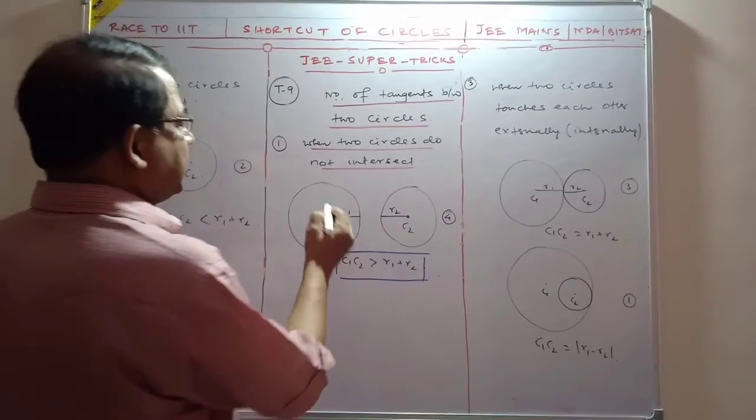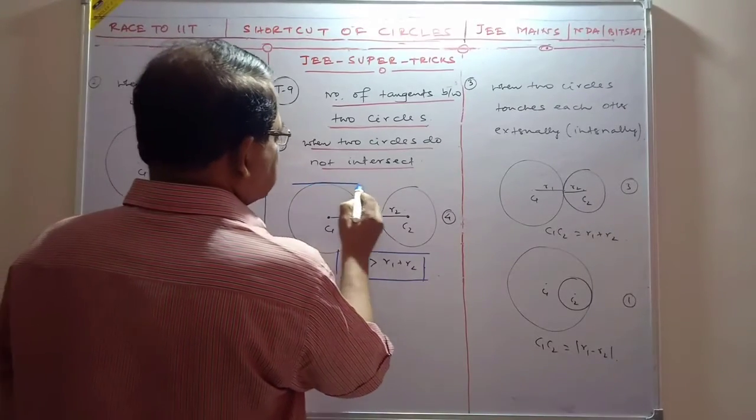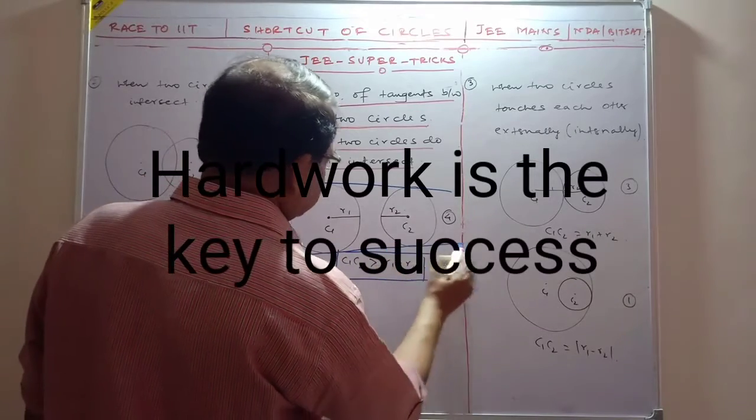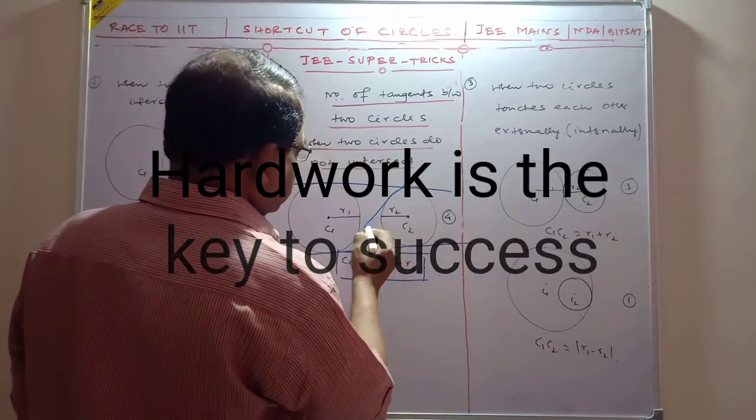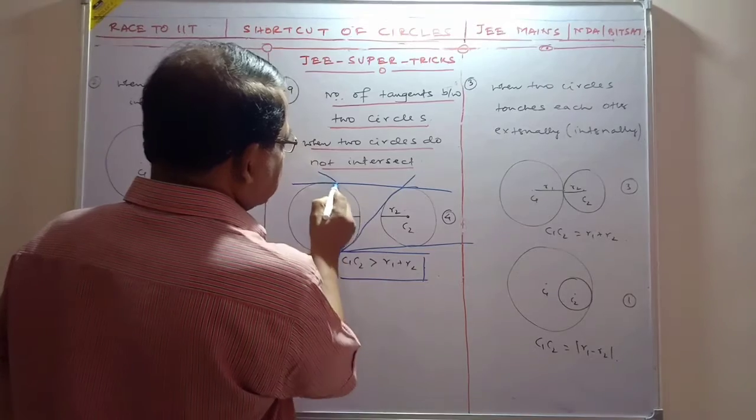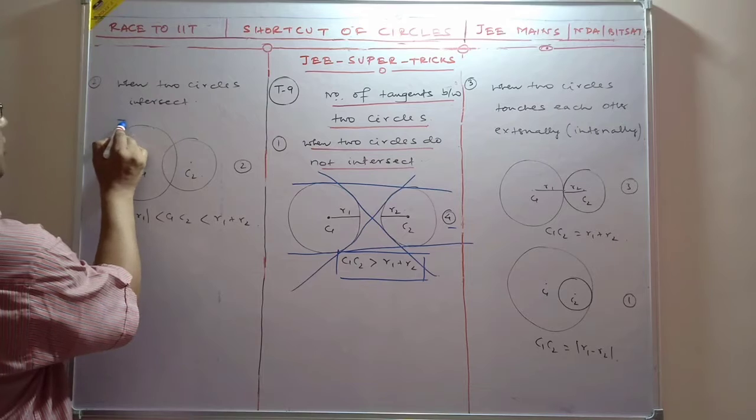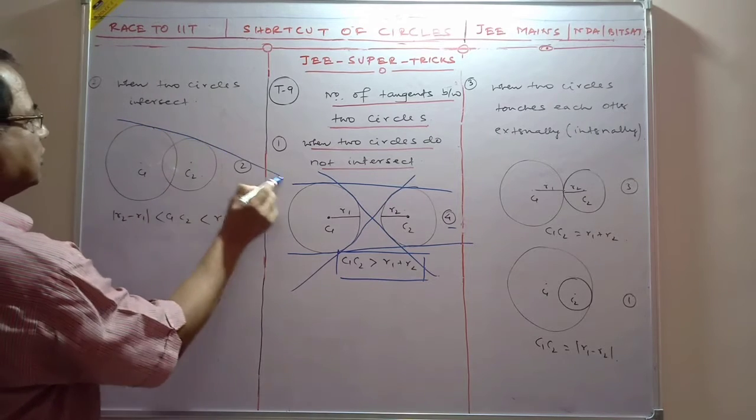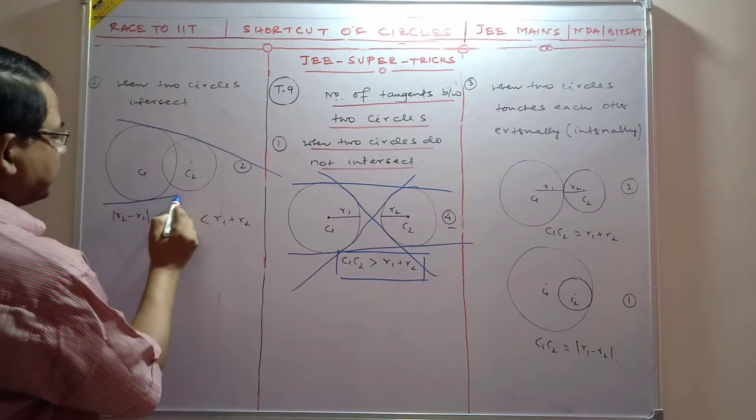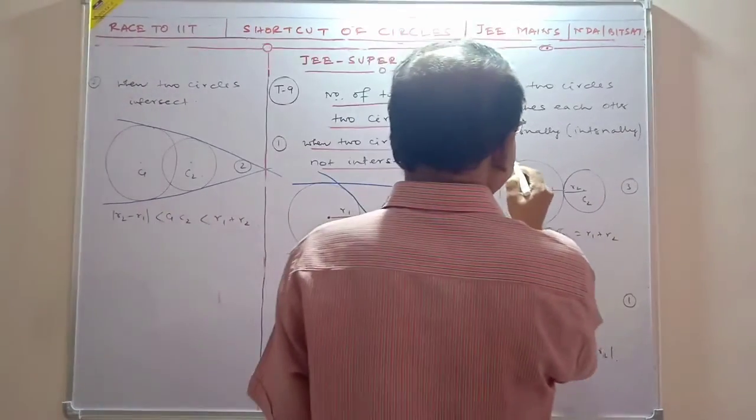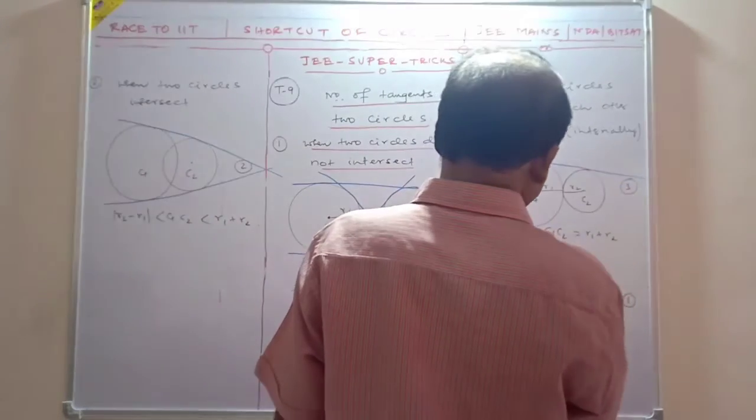I see that you can draw one tangent, and the number of tangents in this case is four. How many tangents can you draw? Only two tangents you can draw. And how many tangents can you draw? You can draw two tangents like this.